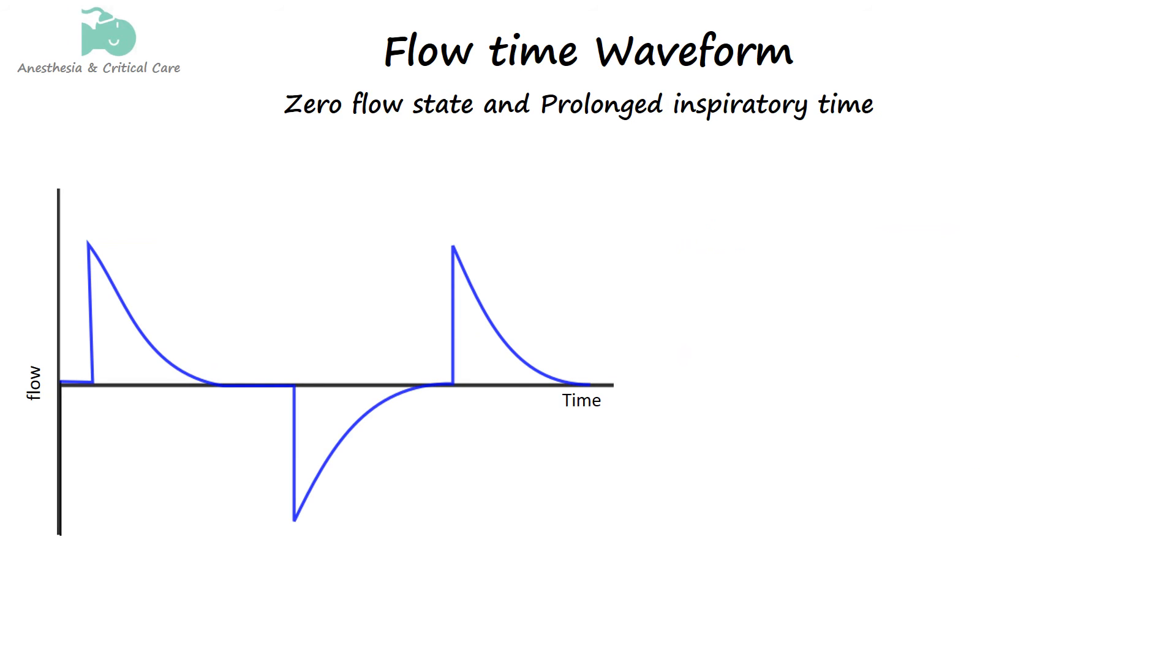Zero flow state in mechanical ventilation refers to a condition where there is no air movement in or out of the patient's lungs. This typically occurs during the end of the inspiratory phase when the ventilator has delivered the set volume or pressure and no more air is being pushed into the lungs. At this point, the ventilator's flow rate is zero and marks the starting point for expiration. If this zero flow state is extended compared to normal settings, it indicates that the inspiratory time is prolonged. The curve will show a longer horizontal segment at the baseline.